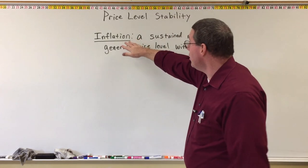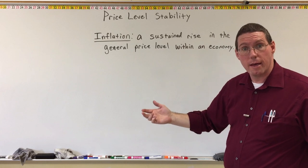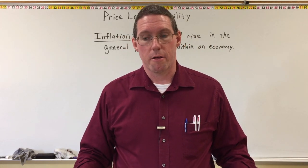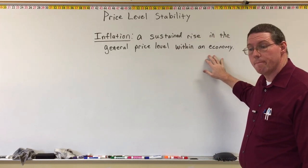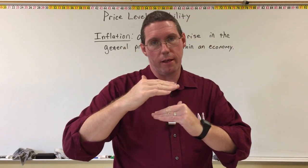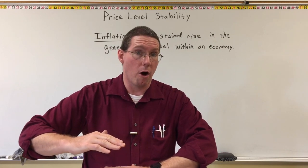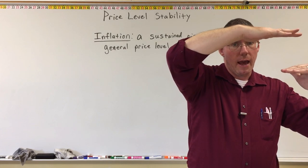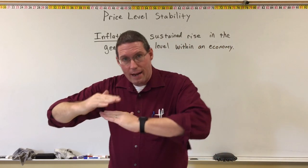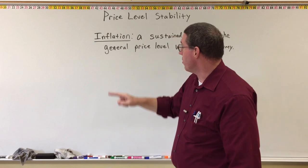So inflation is a sustained rise in the general price level of stuff in the economy. It's not just when the price of something goes up, because we have fluctuations in prices — especially because of coupons or sales. A sustained rise in the general price level means that window of prices has moved higher. In 1990 the window for gas was 89 cents to 98 cents a gallon, but almost 30 years later the window is $2.70 to $3.00 a gallon. The fact that window has risen over 30 years is what we mean by inflation.